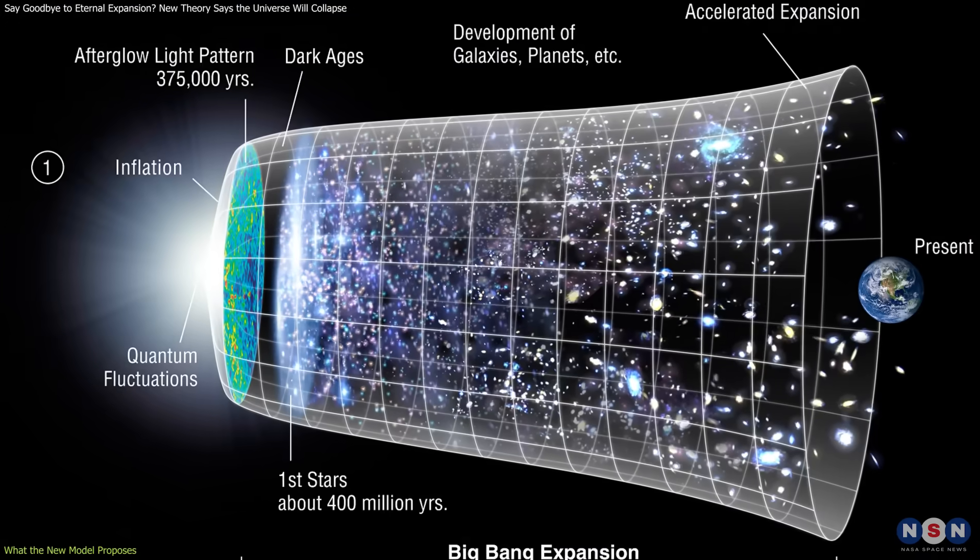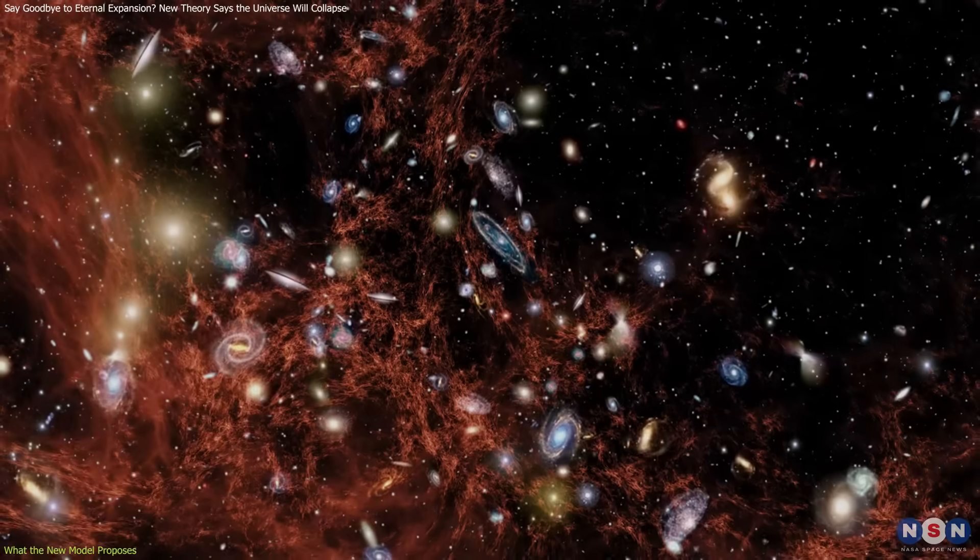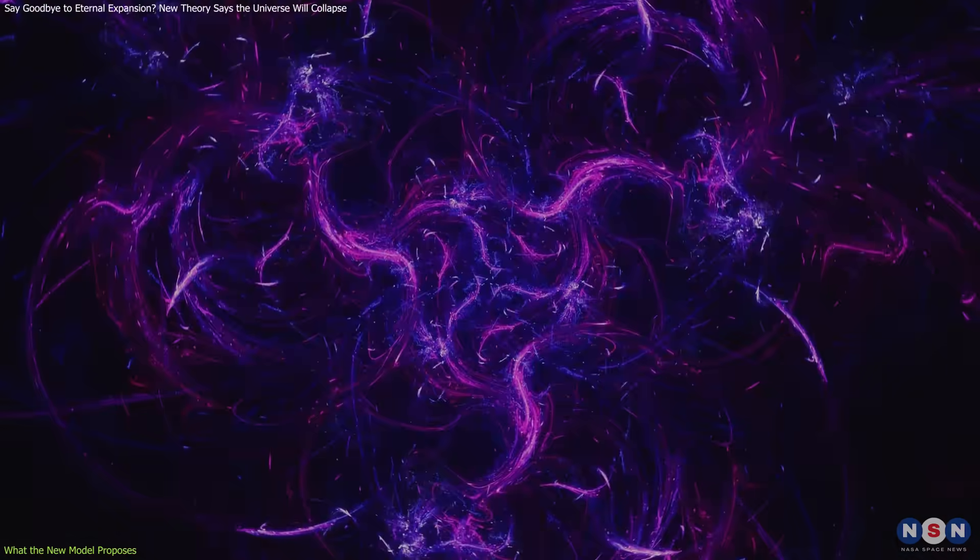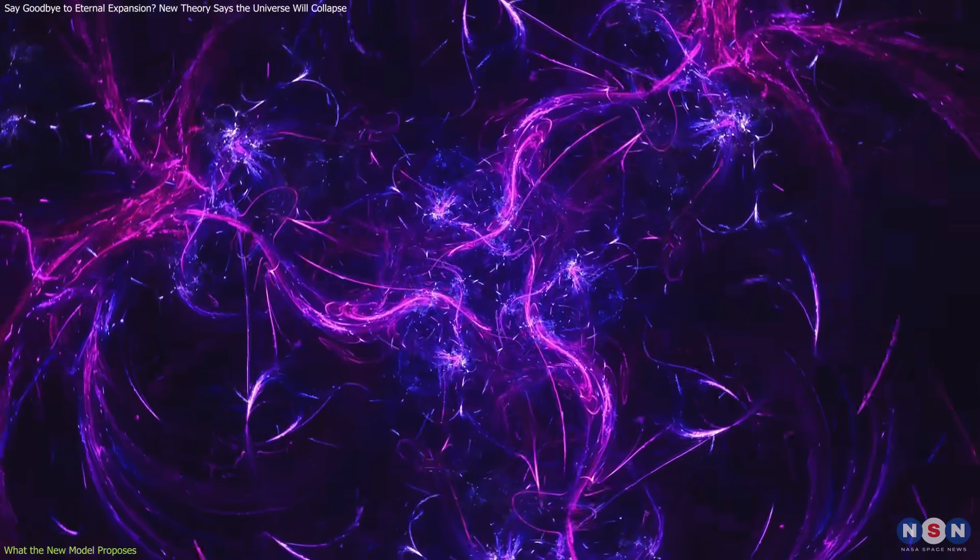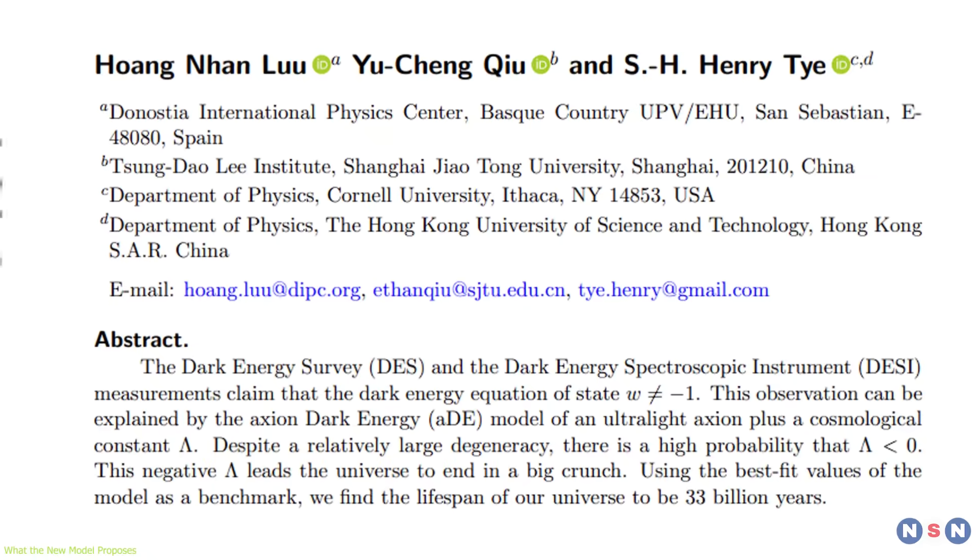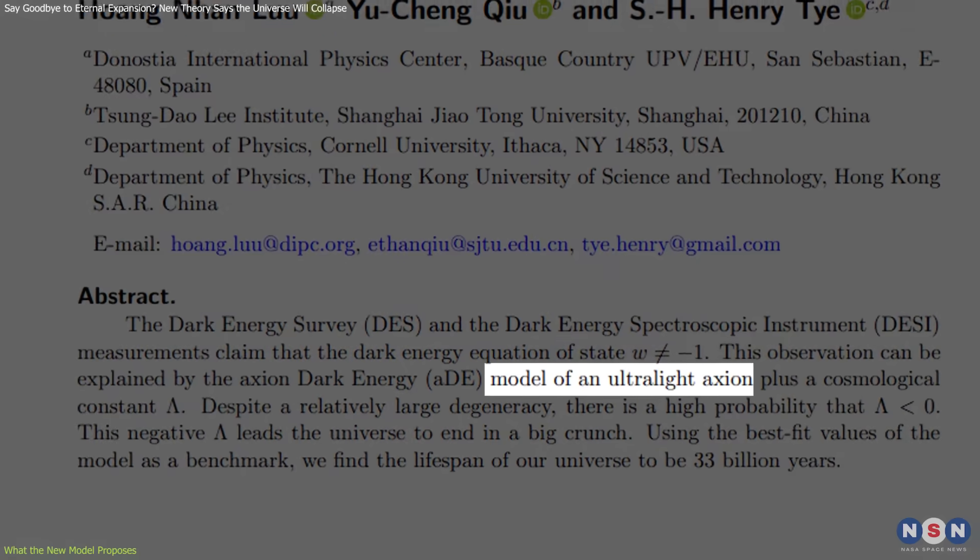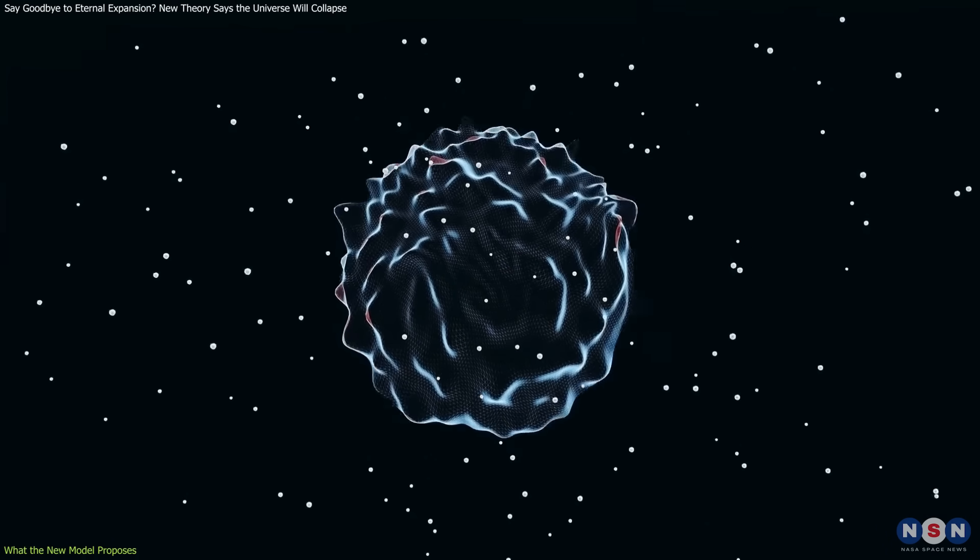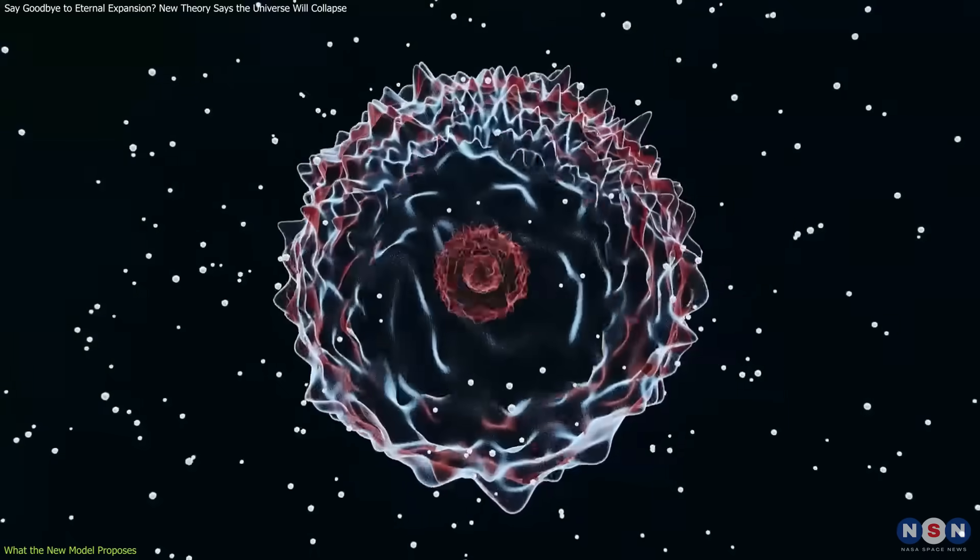The study challenges the standard cosmological model by proposing that dark energy isn't a permanent feature of space. Instead, it may behave more like a field that changes over time. To explain this, the researchers suggest the existence of an ultralight axion, a hypothetical particle long theorized in physics. In their model, this axion forms a slowly evolving field that changes the overall energy density of space.